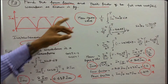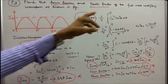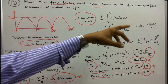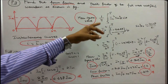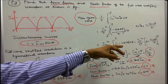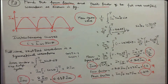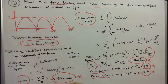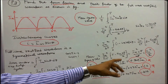The mean square value = (1/pi) × integral from 0 to pi of I_m² × sin²θ dθ. Using sin²θ = (1 − cos 2θ)/2, the mean square value = (I_m²/2pi) × [θ − sin 2θ / 2] from 0 to pi = I_m² / 2. Therefore, I_rms = sqrt(I_m²/2) = I_m / √2 = 0.707 I_m.